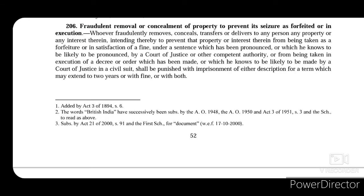Let's move to Sections 206 to 208, which talk about abuse of process of court. Sections 206 and 207 punish fraudulent acts designed to prevent seizure of property. Section 206 applies to a person who fraudulently removes any property with intent to prevent lawful seizure — an authority is trying to lawfully seize a property but this person fraudulently removes it. That person would be punished with imprisonment for a term which may extend to 2 years, or with fine, or with both.